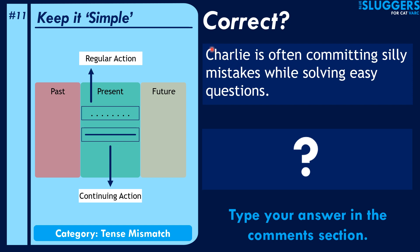Now let's try this example by yourself. The sentence says: Charlie is often committing silly mistakes while solving easy questions. By the way, this is a slightly trickier sentence. Let's see if you can point out the error.